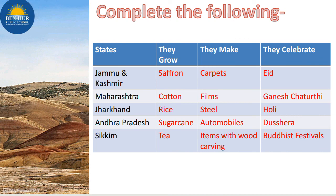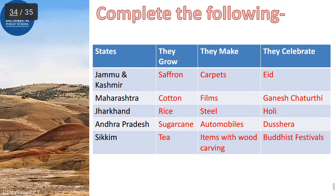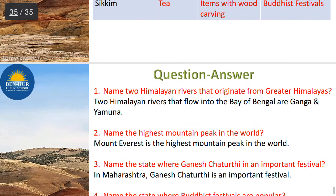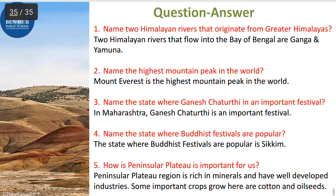In Jharkhand, they grow rice, they make steel, and they celebrate Holi. In Andhra Pradesh, they grow sugarcane, they make automobiles, and they celebrate Sankranti. In Sikkim, they grow tea, they make wood carving items, and they celebrate Buddhist festivals.